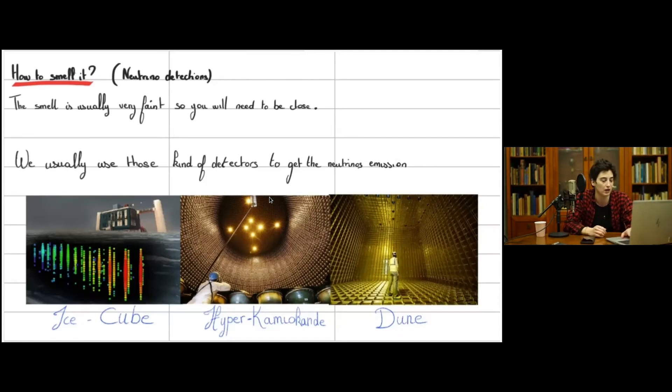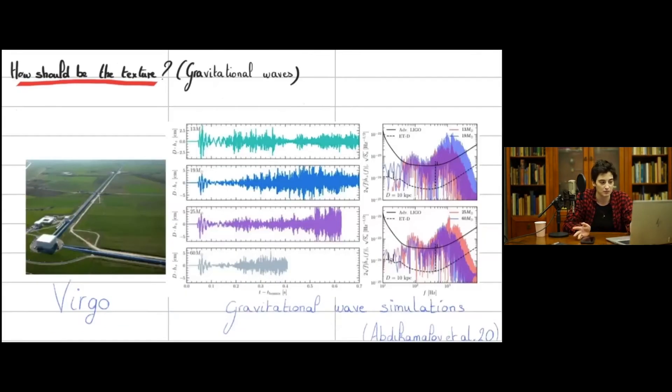Now the textures, gravitational waves. I think that most of you heard about Virgo and LIGO. LIGO is composed of two bases like that, two interferometers, one in the western part of the US and one in the eastern part of the US. And Virgo is in Italy. Four kilometers long arms with an extremely powerful laser going through in order to do interferometry.